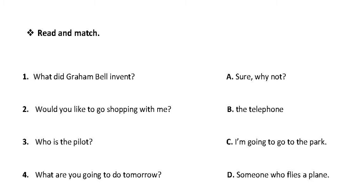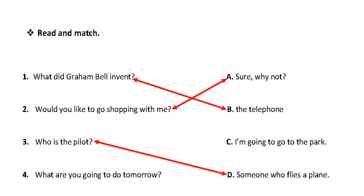Number one, 'What did Graham Bell invent?' — he invented the telephone. Number two, 'Would you like to go shopping with me?' — Sure, why not? Number three, 'Who is the pilot?' — he is someone who flies a plane; the pilot is someone who flies a plane. Number four, 'What are you going to do tomorrow?' — I'm going to go to the park.